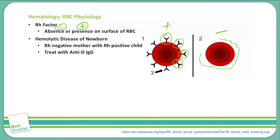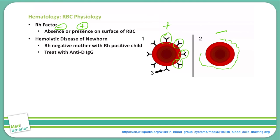This is important in one particular group of people: pregnant women. We can have a disease called hemolytic disease of the newborn, any time we see an Rh negative mother who has an Rh positive child. The mother would be exposed to fetal blood, typically during birth, and her body would then create anti-Rh antibodies that can cross the placenta in subsequent pregnancies and attach to the blood of the fetus, which could cause problems. To treat that, we use anti-D IgG immunoglobulin, which will be given to the mother in the third trimester as well as in the early postpartum.